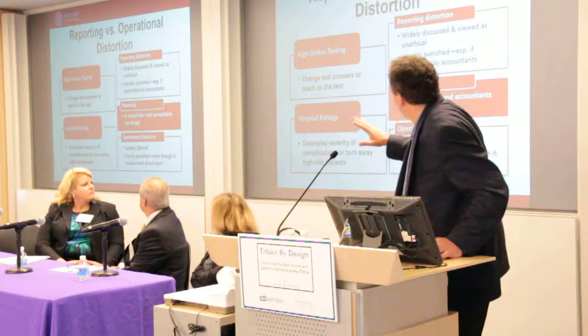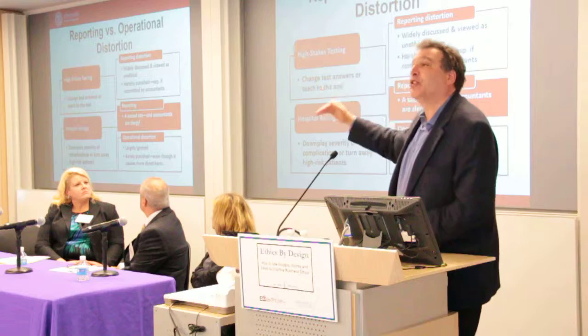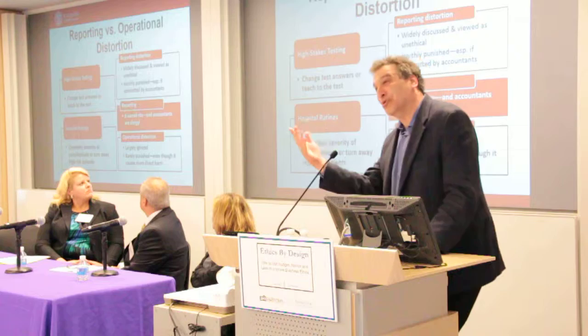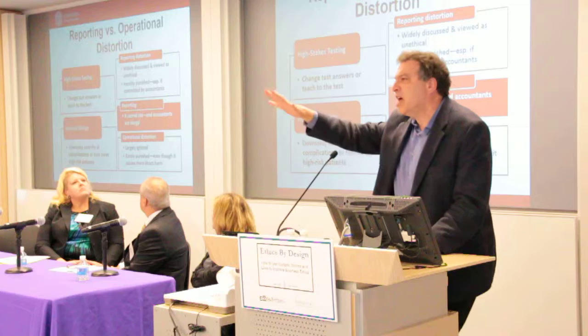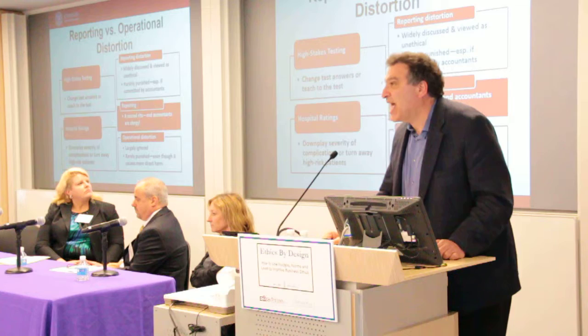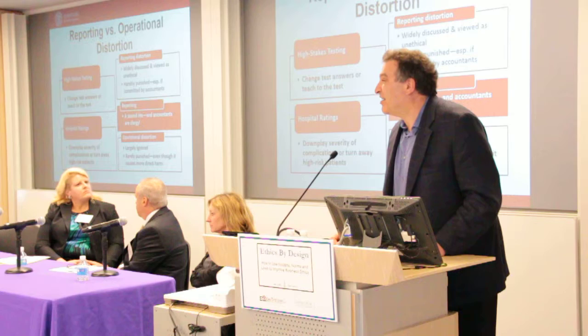In each of these cases, I've given two versions of measure management. The first one is what I call reporting distortion — it's where you change how you report what actually happened. You lie. You deceive. This is the bulk of compliance issues. A lot of what gets discussed here is about reporting distortions, misreporting what actually happened. It's widely discussed, widely viewed as seriously unethical, and it's very harshly punished.